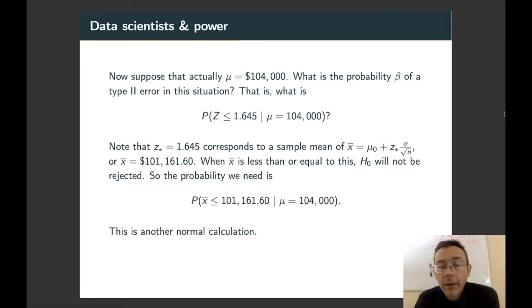So that z-star equals 1.645 can be immediately translated into an x-bar value, $101,161.60. So if we go out and get a sample and x-bar is less than or equal to that, then H-naught is not going to be rejected. So if we're talking about a type 2 error, we're talking about a situation where x-bar is less than that.